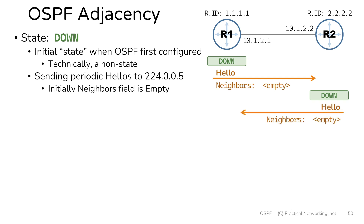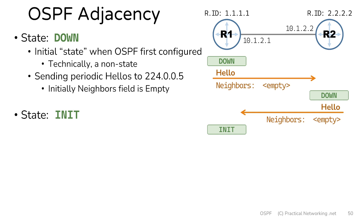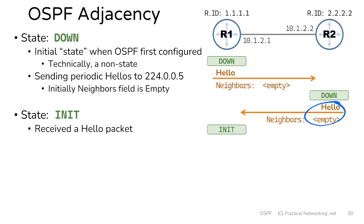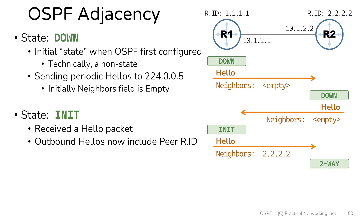Just like router1, router2 is going to start sending out these hello packets. Notice that router2's neighbor field is also empty — that's because OSPF was configured right about here, after this hello packet had already been sent. So technically router2 hasn't received a hello packet after OSPF was configured. But from router1's perspective, OSPF is already configured when this hello was sent and received, which means router1 has just received a hello packet from a potential neighbor. That triggers router1 to transfer into init state, or the initialization state. The init state happens anytime a hello packet is received.